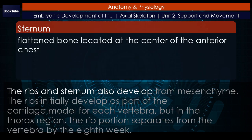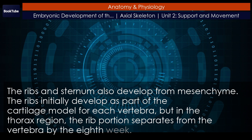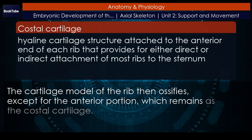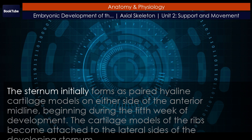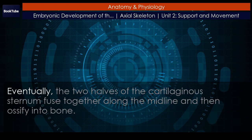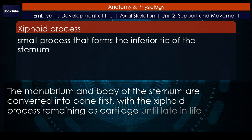The ribs and sternum also develop from mesenchyme. The ribs initially develop as part of the cartilage model for each vertebra, but in the thorax region, the rib portion separates from the vertebra by the eighth week. The cartilage model of the rib then ossifies, except for the anterior portion, which remains as the costal cartilage. The sternum initially forms as paired hyaline cartilage models on either side of the anterior midline. Beginning during the fifth week of development, the cartilage models of the ribs become attached to the lateral sides of the developing sternum. Eventually, the two halves of the cartilaginous sternum fuse together along the midline and then ossify into bone. The manubrium and body of the sternum are converted into bone first, with the xiphoid process remaining as cartilage until late in life.